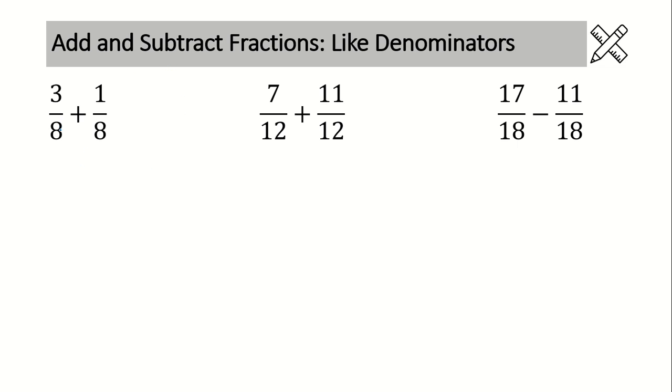Let's take a look at our first example. We have like denominators of 8. We always work down the page. So we put an equal sign right here, put in a fraction bar, and then write in your denominator of 8. Remember we never add or subtract the denominators. We only add or subtract the numerators. So we have 3 plus 1 which is 4 and so that's it.